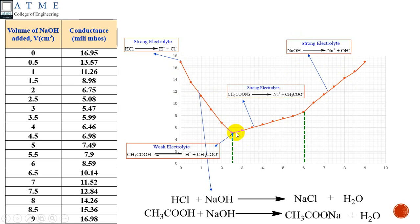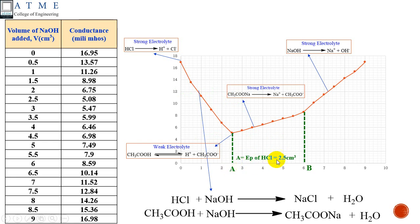Extrapolate the lines. The point of intersection gives the volume of NaOH. We call the first intersection point A and the second point B. Point A refers to the equivalence point of HCl, which is 2.5 cm³, meaning 2.5 cm³ of NaOH is required to neutralize HCl. Point B minus A, which is 3.5 cm³, is the equivalence point of acetic acid. By this we can find out the equivalence points of the two acids present in the solution.